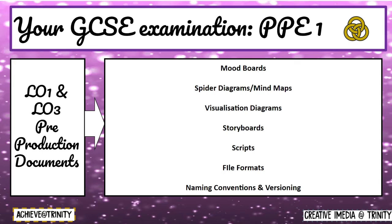The exam paper is split into four learning objectives. Learning objectives 1 and 3 will concentrate on the different pre-production documents that students have had experience of learning and making both last year and this year. Students must ensure they revise all of the different pre-production documents, knowing the purpose of each document, why it would be used, and what the pre-production document would contain.